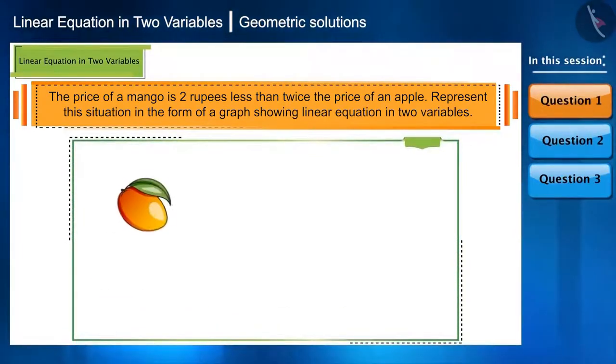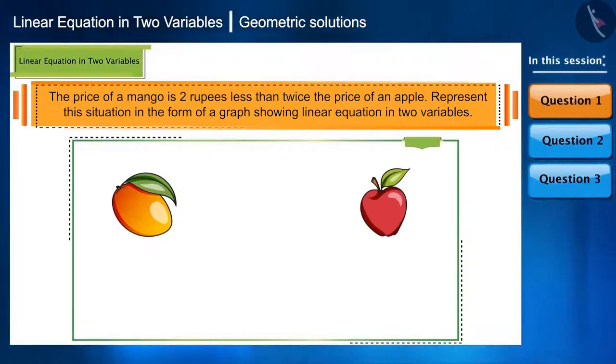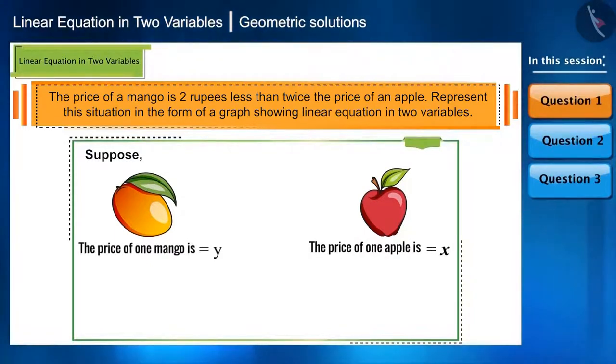First of all, here we have two fruits, mango and apple. We have to make an equation with two variables. So, we will consider the price of one fruit as x and the price of the other fruit as y. So, suppose the price of one apple is x and the price of one mango is y.